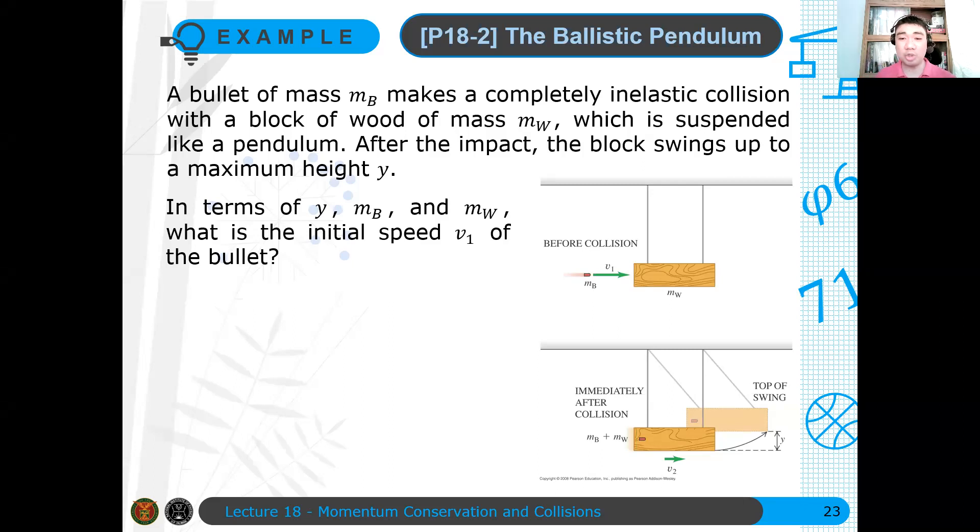So, the ballistic pendulum is usually used to measure the speed of a particular bullet. That's how it's done. For example, in ballistics, that's what they have to measure the velocity of a bullet. They use the ballistic pendulum as a way to measure it.